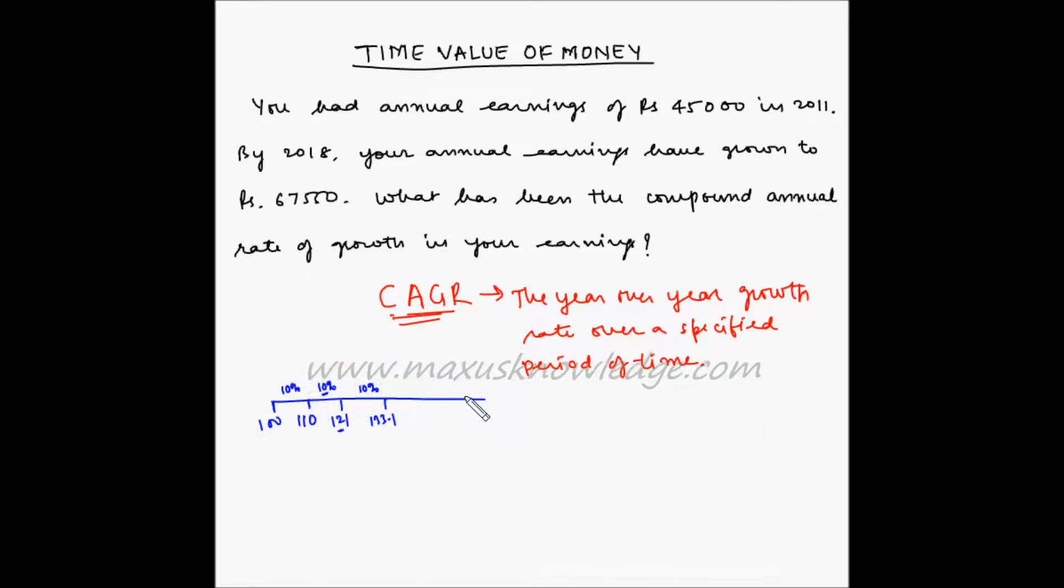we want to find out that if today the earning is 45,000 and after 7 years, the earning is 67,550. So this is 7, 0, 1, 2, 3, 4, 5, 6, 7. Then what is the compound annual growth rate?